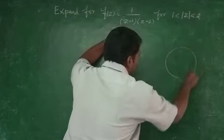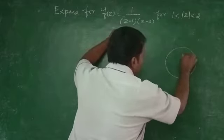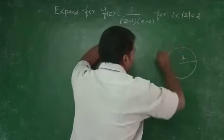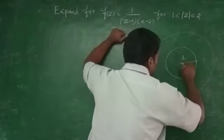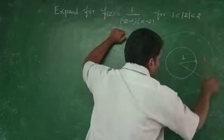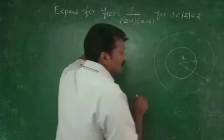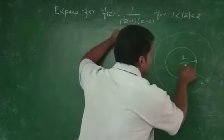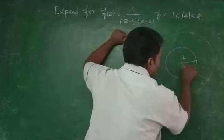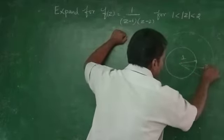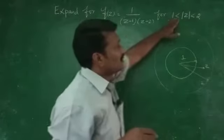If I consider this is 1, this is 2, then Z lies in between 1 and 2. This is Z. This is the condition.